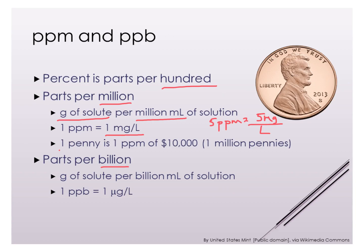Likewise with parts per billion, which is for even smaller concentrations — it's a gram of solute per billion milliliters of solution. For one part per billion, we can express it as 1 microgram per liter. In the cases we'll come across, we'll always talk about concentration in terms of mass over volume.